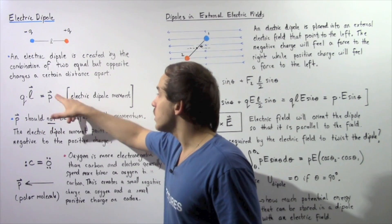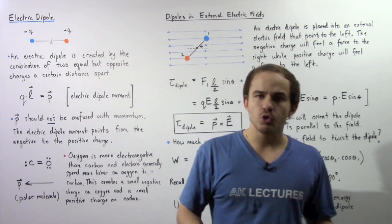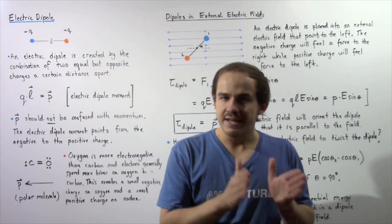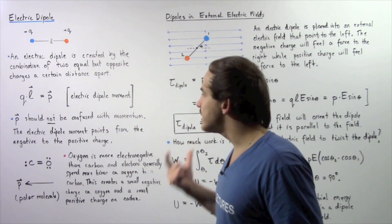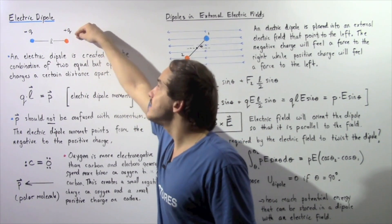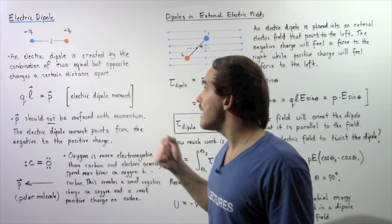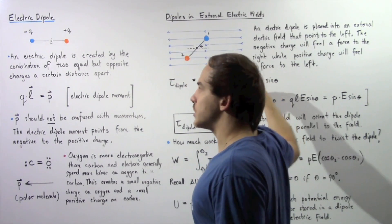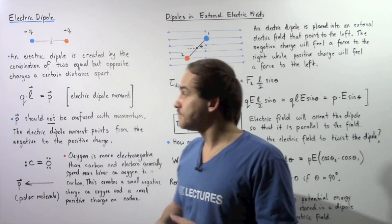Notice that our electric dipole moment is a vector — it has magnitude as well as direction. The convention in physics is as follows: our electric dipole moment begins on the negative side and ends on the positive side. So in physics, our electric dipole moment would point in the positive direction along the x-axis.